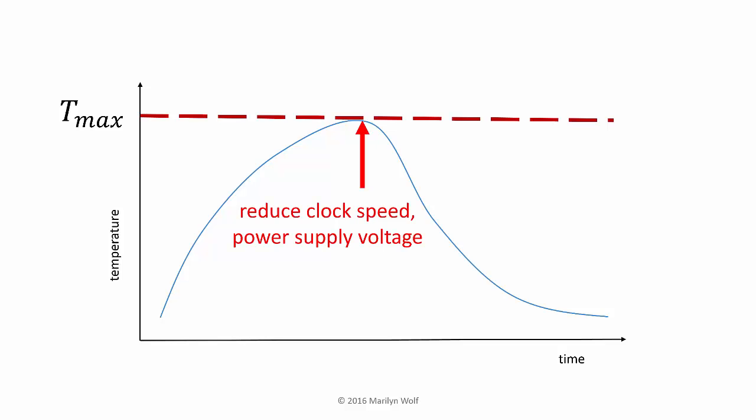At that point, the logic in the processor automatically slows down the processor by a combination of reducing the clock speed, reducing the power supply voltage, and perhaps duty cycling the clock. As a result, the chip will burn less power and therefore its temperature will decrease, taking it away from the danger zone.